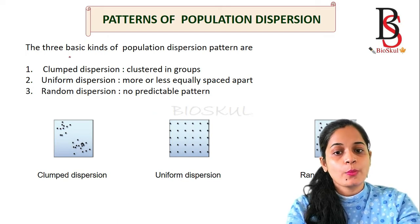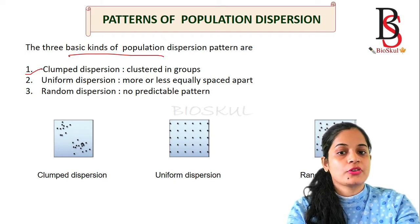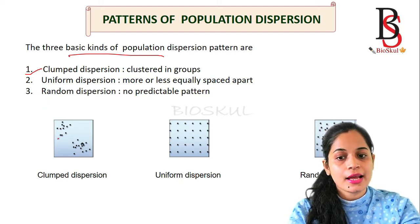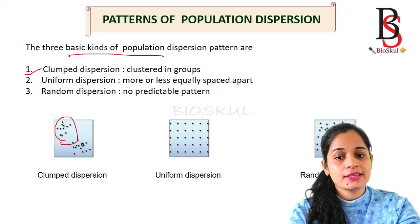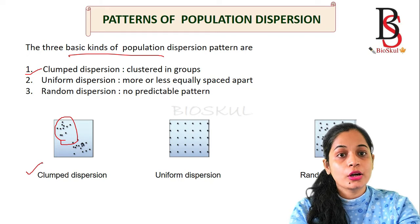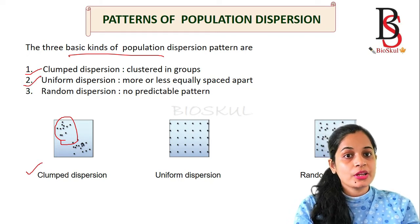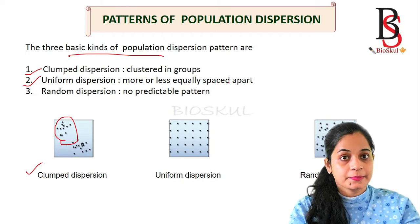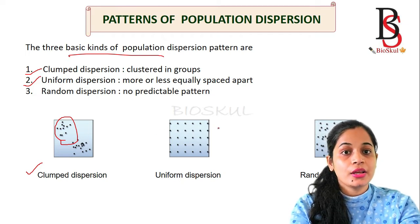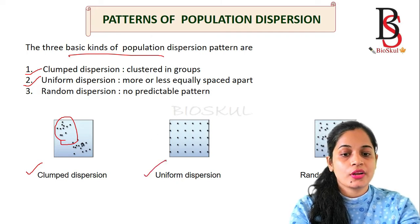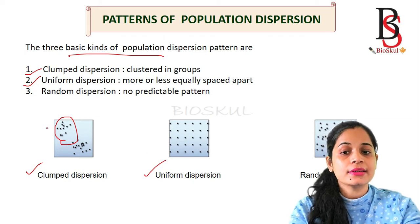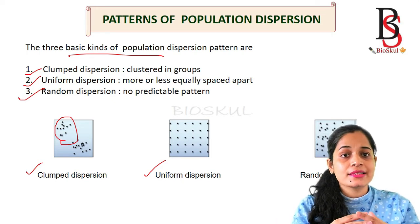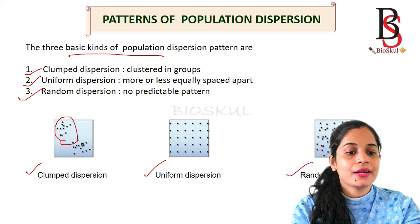The three basic kinds of population dispersions are clumped, uniform, and random. Clumped dispersion means individuals are clustered in a group — as seen in the diagram, individuals are arranged in groups. Uniform dispersion is where individuals are equally spaced apart. Random dispersion means there is no predictable pattern and individuals are arranged here and there.